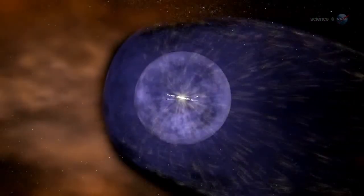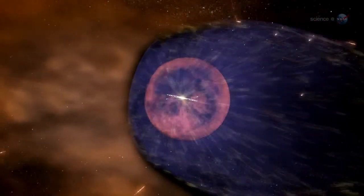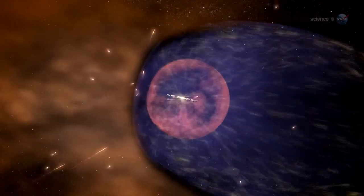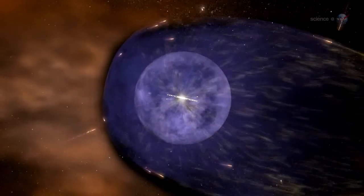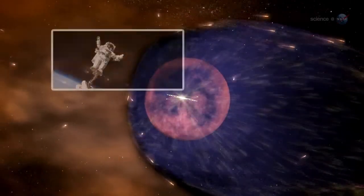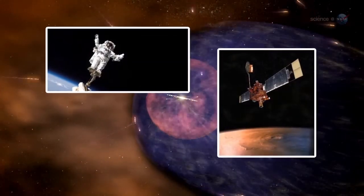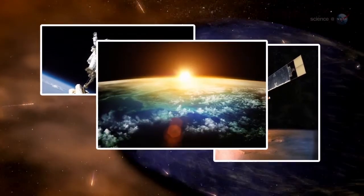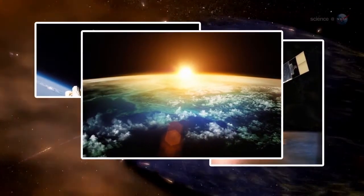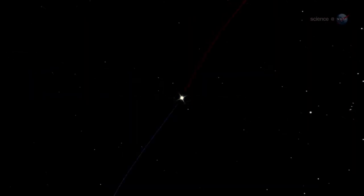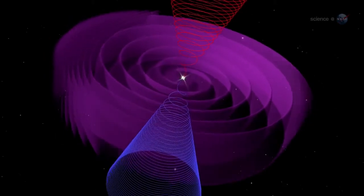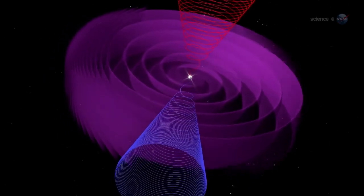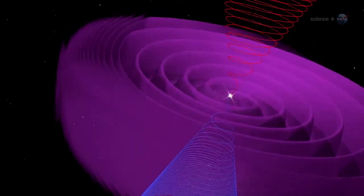Cosmic rays are also affected. These are high-energy particles accelerated to nearly light speed by supernova explosions and other violent events in the galaxy. Cosmic rays are a danger to astronauts and space probes, and some researchers say they might affect the cloudiness and climate of Earth. The current sheet acts as a barrier to cosmic rays, deflecting them as they attempt to penetrate the inner solar system. A wavy, crinkly sheet acts as a better shield against these energetic particles from deep space.